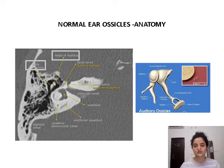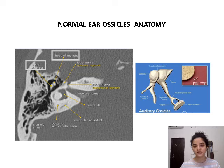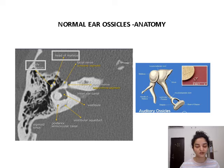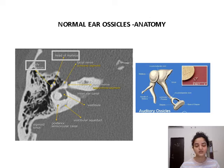Normal ear ossicles anatomy. The second image clearly depicts the three auditory ossicles: the malleus, incus, and stapes. The malleus and incus form a joint called the incudomalleolar joint, and the incus and stapes form a joint called the incudostapedial joint. The head of malleus and the body of incus form a specific appearance called the ice cream cone appearance, which is very well appreciated in the axial section of the HRCT temporal bone.